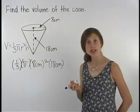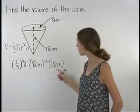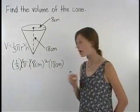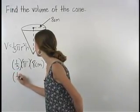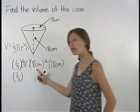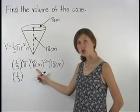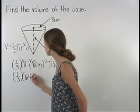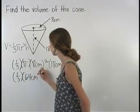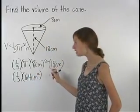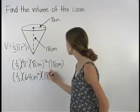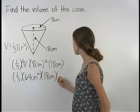Start by simplifying the exponent and moving pi to the end. So we have 1/3 times 64 centimeters squared, times 18 centimeters, times pi.